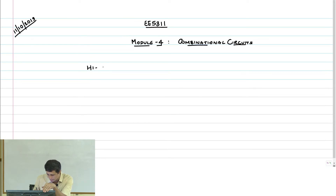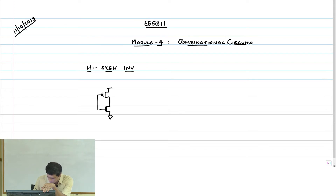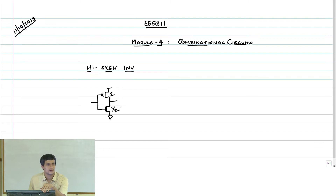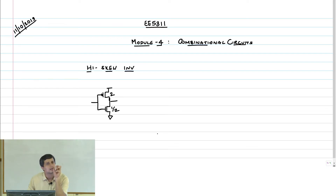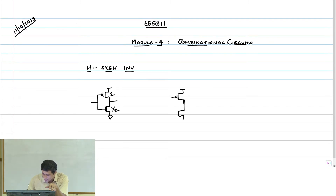If I take a high skew inverter, we said the size is going to be 2 and a half. Some of you had a question: what if half is not allowed in the technology? The point is logical effort is independent of that — it's size scaling. I will show you that whether I take 2 and a half or 1 and 4, you will get the same answer.